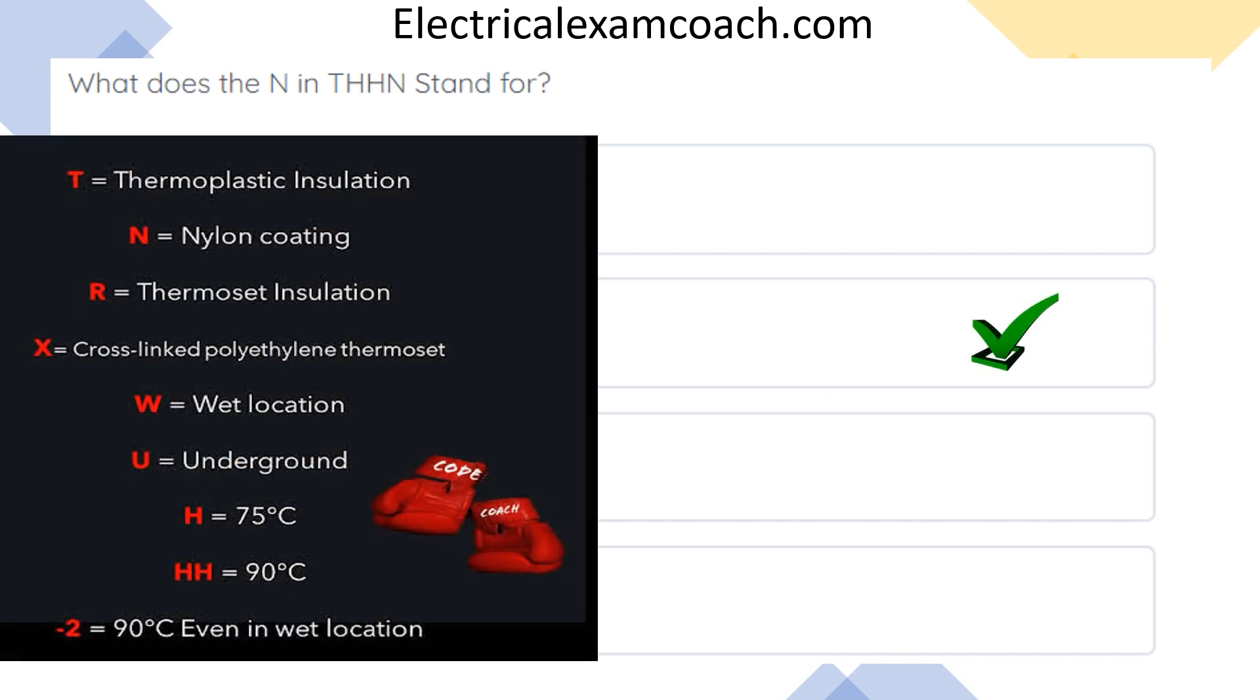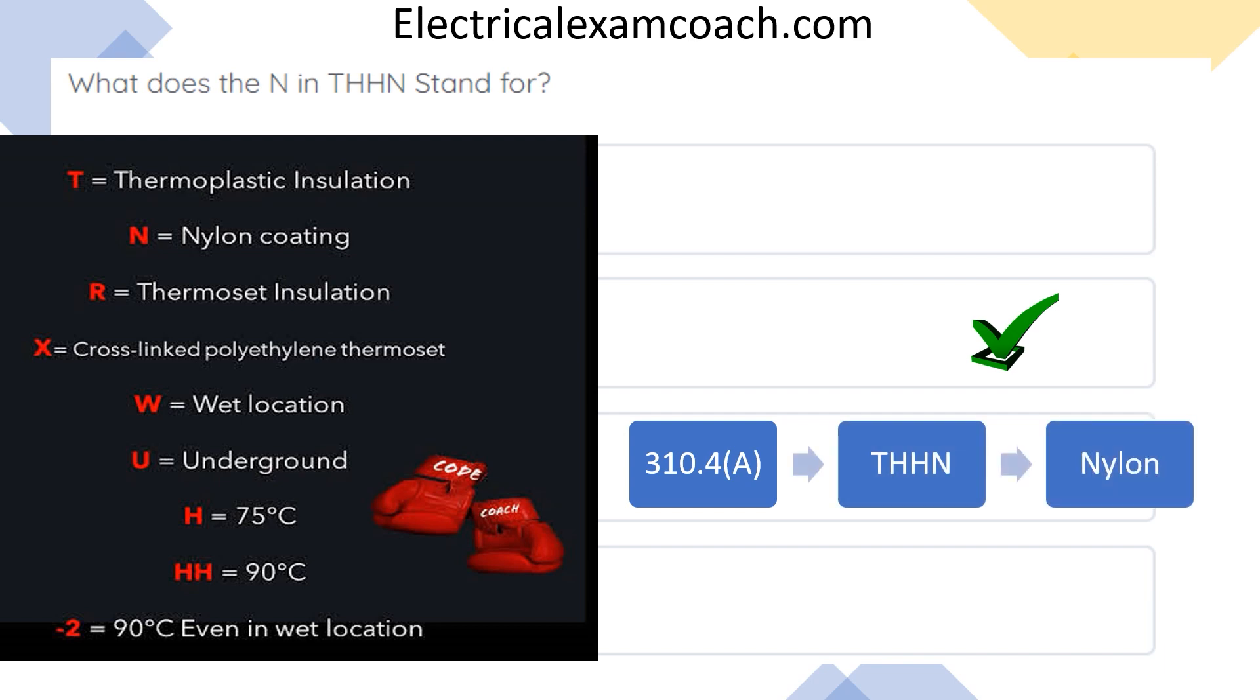So this is a picture that you can get at electricalcodecoach.com under free resources. And this is something that you can use to help you remember. This breaks them all down. How to find it in the code book is something that I actually want you to make a tab for. If you're allowed to make tabs in your state, if not, I just want you to go get familiar with the table. So you're going to head to table 310.4a and you're going to find THHN and then you would be able to find that it is equivalent to nylon coating. And when you get in there, you're going to learn all kinds of fun things about all the different types of wire, whether it's rated 75, 90, respectively, so on and so forth. I am the electrical code coach. Let's go ahead and get to it.